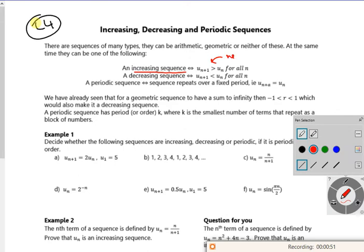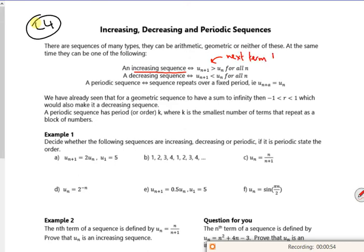If it's decreasing, if it's going down, the next term is smaller than the previous. We've already looked at GPs with the sum to infinity where it's multiplied by a number between plus or minus one, so the numbers decrease. But there's one here that talks about a periodic sequence which has an order k.